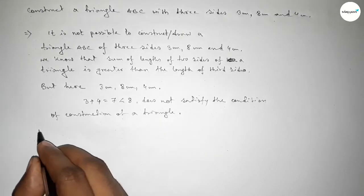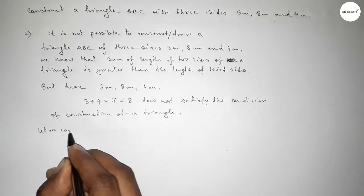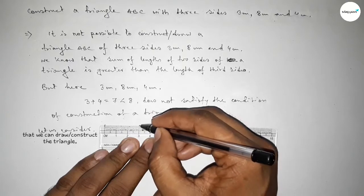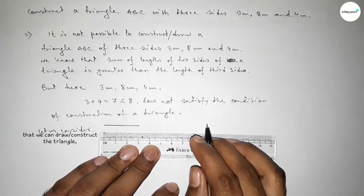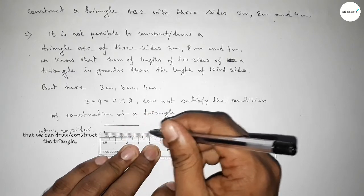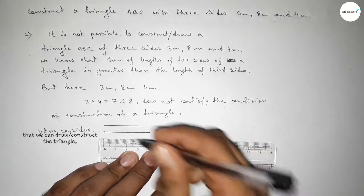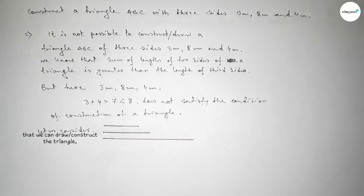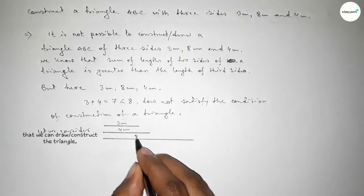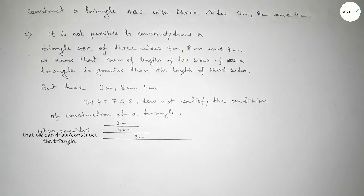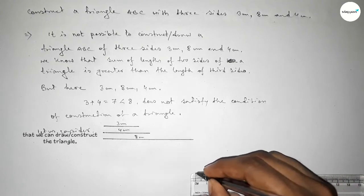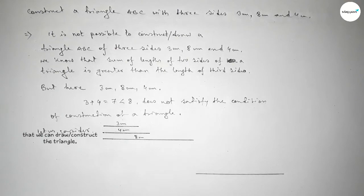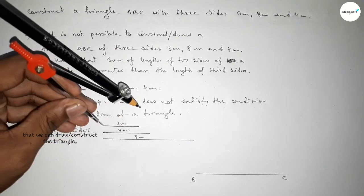Now let us assume we can construct the triangle. First, drawing a side of three centimeters, then a side of four centimeters, and then a line of length eight centimeters. Taking point B and point C, we draw the base line of eight centimeters.